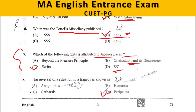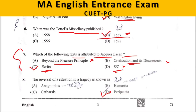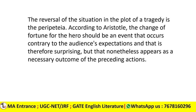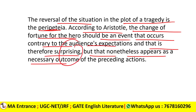Next, there is a question about identifying the work of Roland Barthes. The options include S/Z, Civilization and its Discontents, and Beyond the Pleasure Principle. The only work by Barthes among the options is S/Z. Now, question on Aristotle's Poetics: the reversal of a situation in a tragedy is known as — the correct answer is Peripeteia. It is not catharsis, not hamartia, not anagnorisis — it is Peripeteia. According to Aristotle, the reversal of the situation in the plot of a tragedy is Peripeteia — the change of fortune for the hero should be an event contrary to the audience's expectations, yet appearing as a necessary outcome of the preceding events.